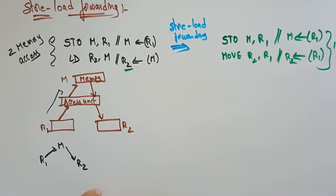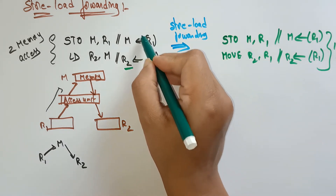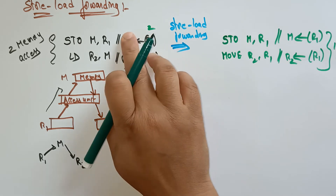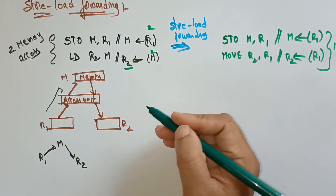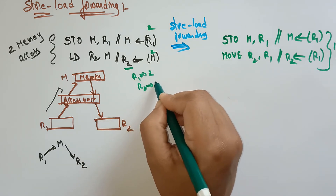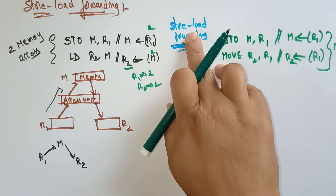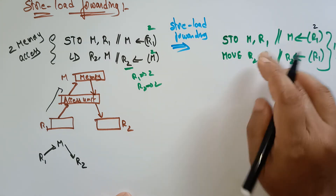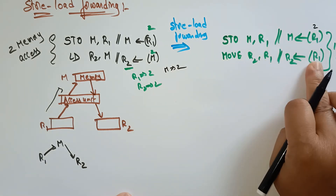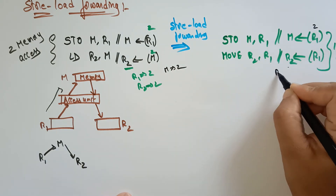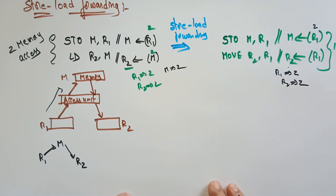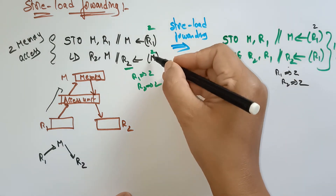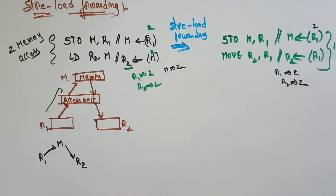For example, if r1 contains the value 2, that 2 will be stored in memory, and then that same 2 will be moved to r2. So r1 contains 2 and r2 contains 2 — the same result. But now we are using only one memory access instead of two. By replacing the second memory access with a register transfer operation, the accessing time is reduced and we save time.